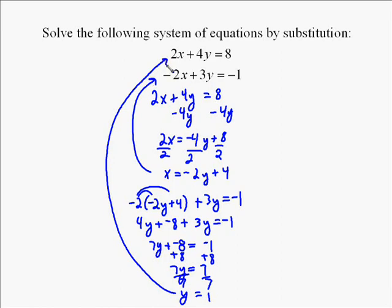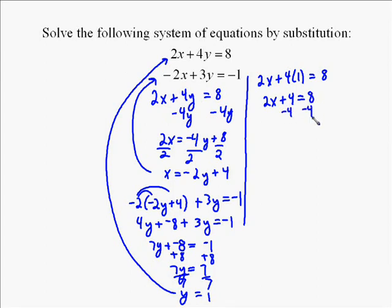Now we take that back in to one of the two originals. It doesn't matter which one. I'll just do it in the first. So to do this one, you're going to have 2x plus 4 times 1 is going to be equal to 8. So we're going to substitute that 1 in for y. So 2x plus 4 times 1 equals 8. 4 times 1 is 4, so you're left with 2x plus 4 equals 8. Solve it, so you subtract 4. You're left with 2x equals 4. Divide both sides by 2 and x equals 2.